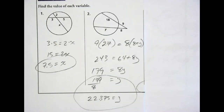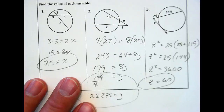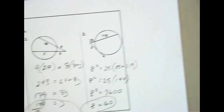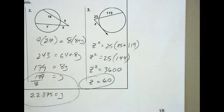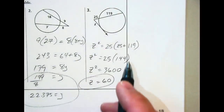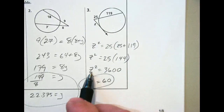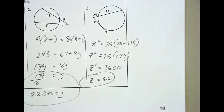How many are done with number three? Checking our work: z squared equals 25 times 25 plus 119. So you find this whole length — 25 plus 119 is 144 — times 25 gives 3600. Take the square root. Remember when you apply the square root symbol it's plus or minus, but the minus doesn't make sense here because it would be a negative length, so just leave it at 60.